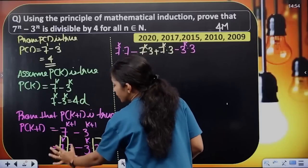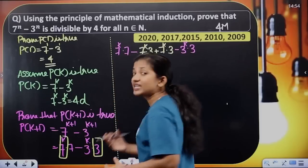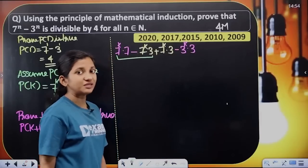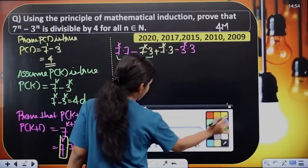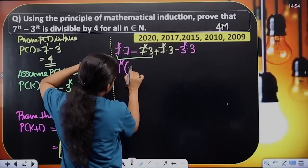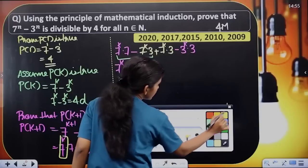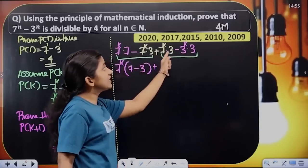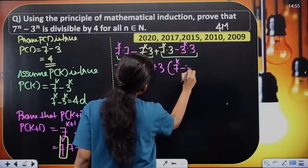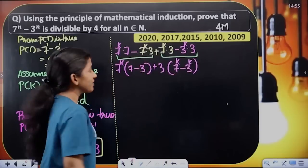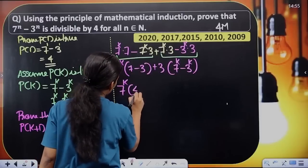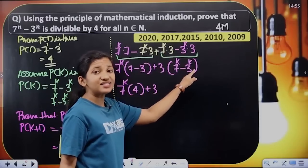We add the same term, then consider the first two terms. Here the term is 7 raised to k. We change the bracket with 7 raised to k, so here 7 raised to k remaining is 7 minus 3. Plus the next two terms — we take out common factor, giving 7 raised to k minus 3 raised to k. Then equal to 7 raised to k times (7 minus 3), and 7 minus 3 equals 4. Plus 3 into (7 raised to k minus 3 raised to k).